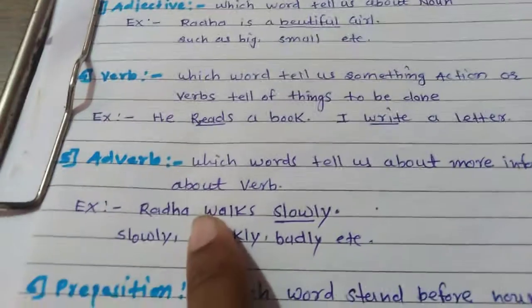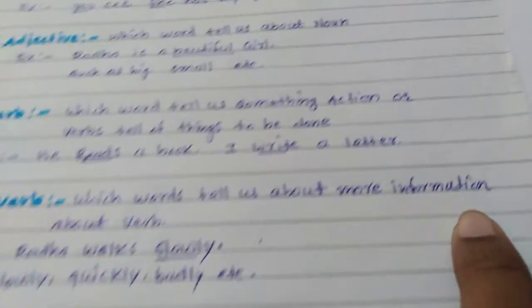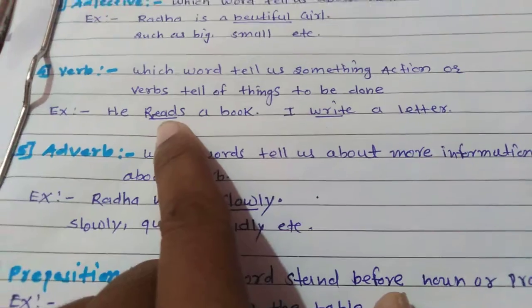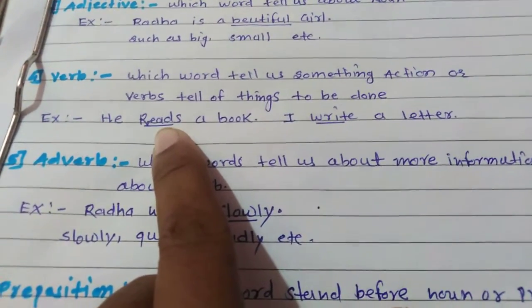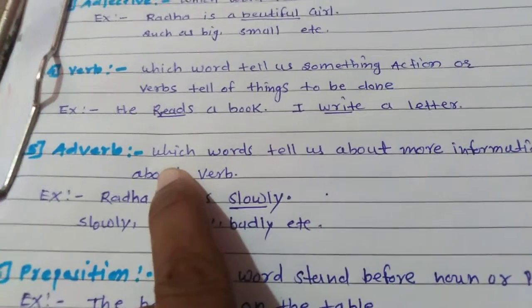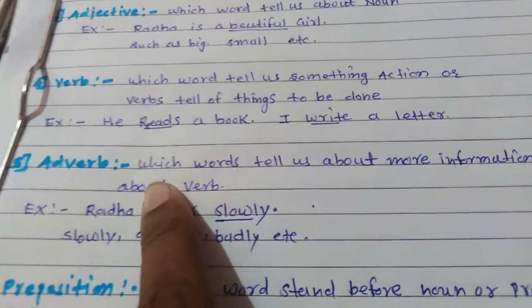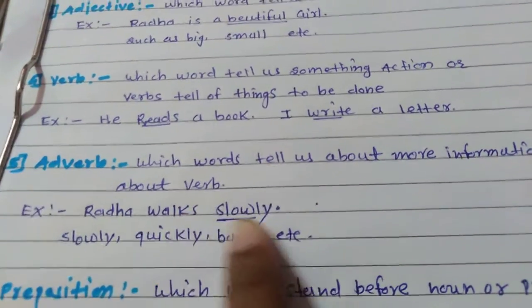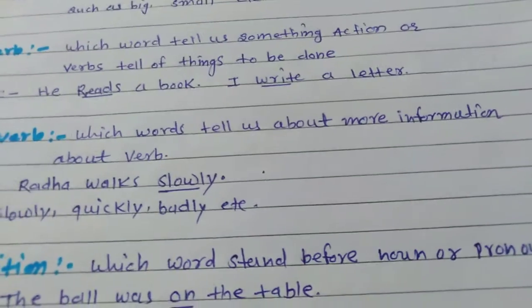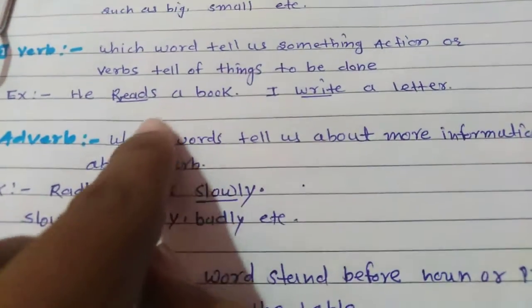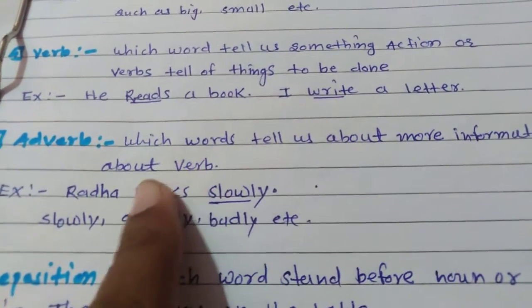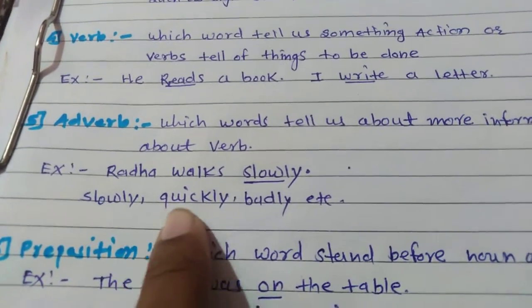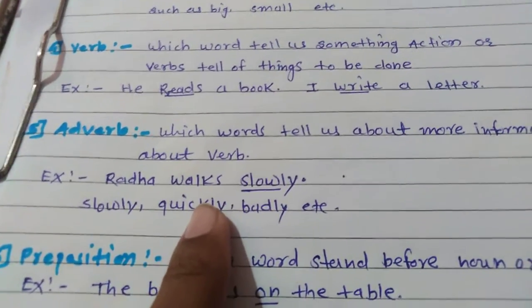Next is adverb. The word that gives us more information about the verb is called as the adverb. For example: 'Radha walks slowly.' Here, Radha is the noun, walks is the verb, and slowly is giving more information about the walking. She walks — but how does she walk? She walks slowly. Words like slowly, quickly, badly, etc. are called as adverb.